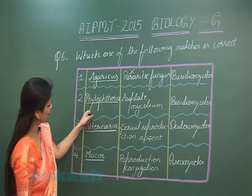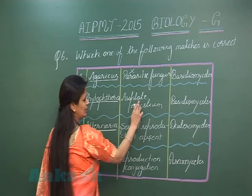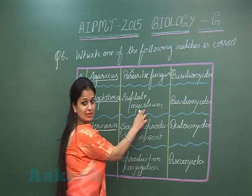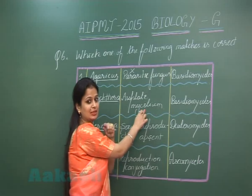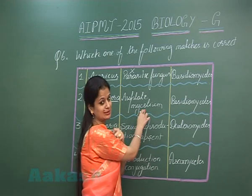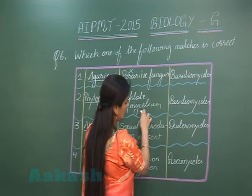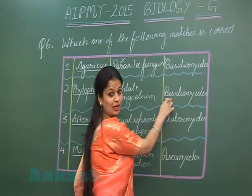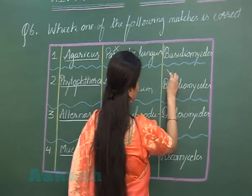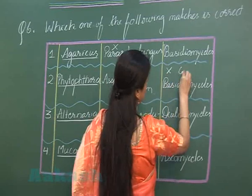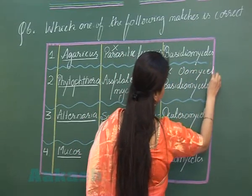Coming to option two: Phytophthora is said to have a septate mycelium. However, the septa are actually absent — it has a coenocytic (siphonous) condition. Also, Phytophthora belongs to Oomycetes, not what is stated here. So this option is also wrong; it should be Oomycetes.